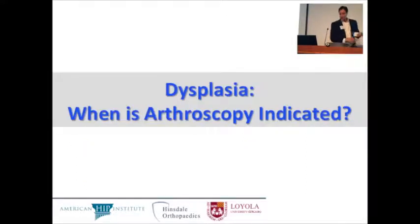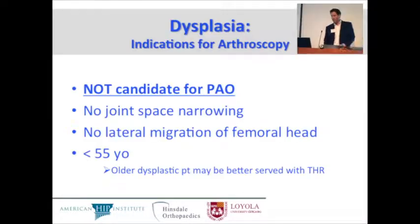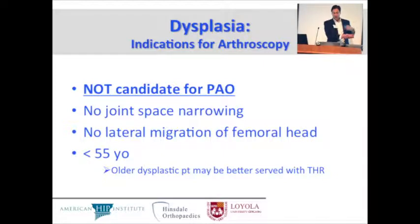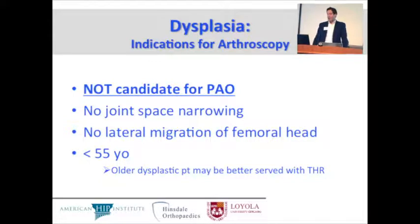When is arthroscopy indicated in dysplasia? Indications for arthroscopy: patients who are not a candidate for a PAO, no joint space narrowing, no lateral migration of the femoral head, and patients probably less than 55 years old — because beyond that age, in the setting of dysplasia, patients are probably better served with a total hip.